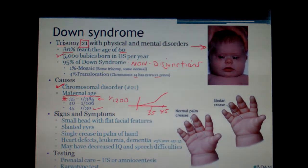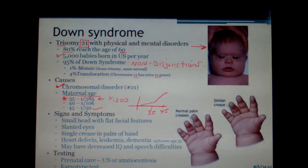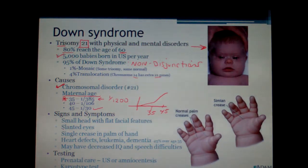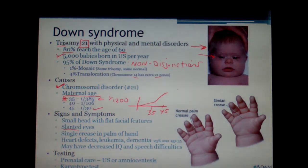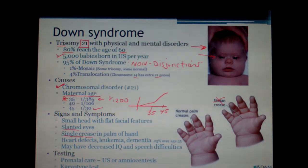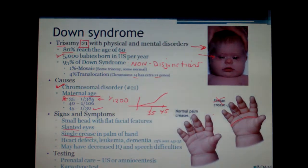Down syndrome children have a small head with flat facial features — everything is relatively flat with not much protrusion. They have slanted eyes due to epicanthal folds, and a single crease in the palm of the hand. This used to be called a simian crease, but that term is no longer considered appropriate.